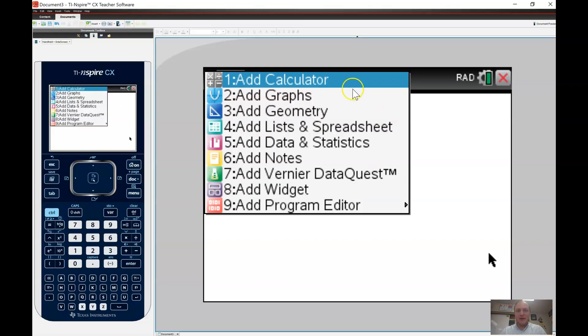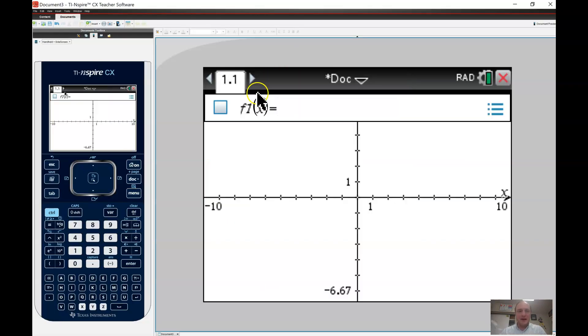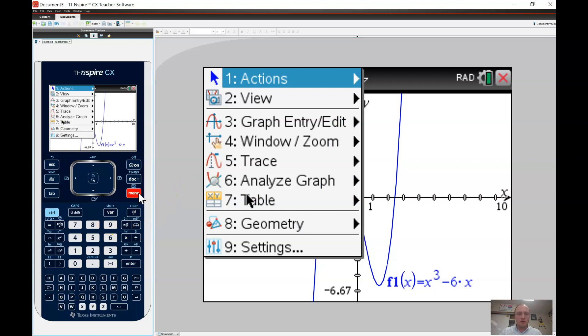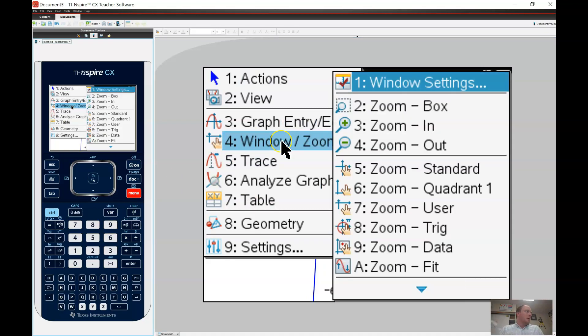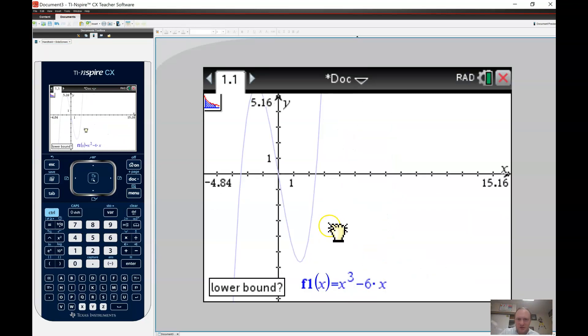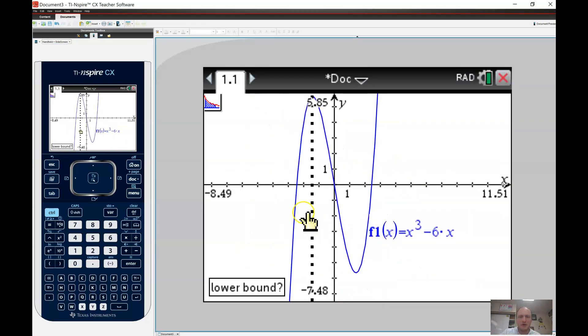So I'm going to bring up the calculator, and I'm going to add a graph. And what I'm going to do is I'm going to add in the function, the first example that they want us to go ahead and graph. So here is the function, and they want the integral from negative 3 to 1. So I'll go analyze graph, integral.